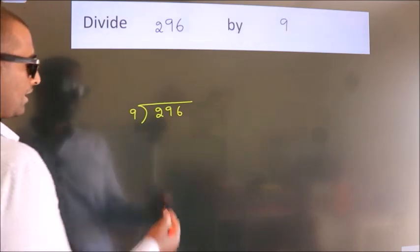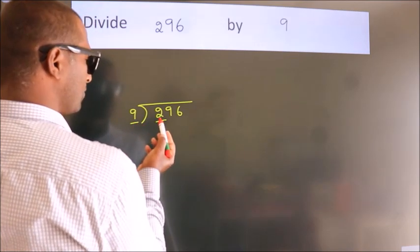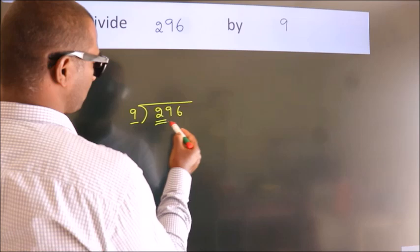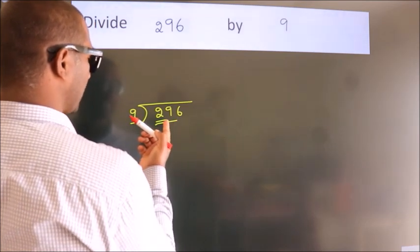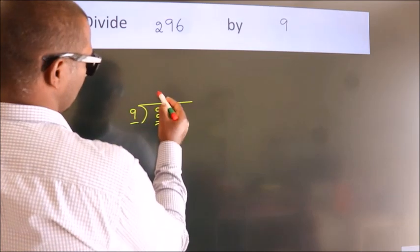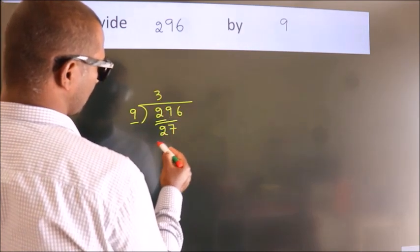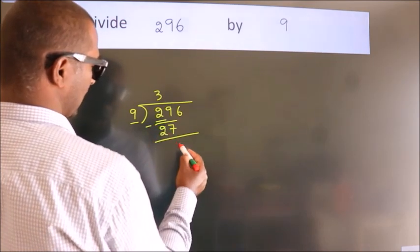Next, here we have 2, here 9. 2 is smaller than 9, so we should take 2 numbers: 29. A number close to 29 in the 9 table is 9 threes, 27. Now we should subtract. We get 2.